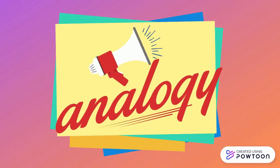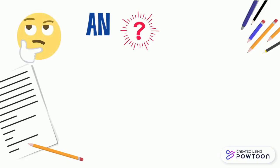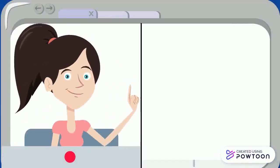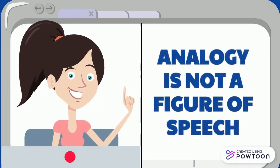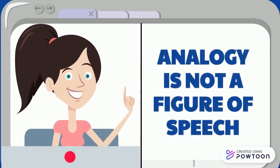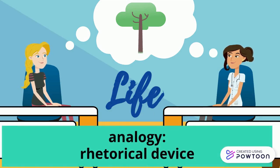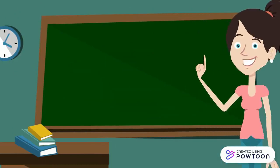One example of these techniques is the use of analogy. An analogy is a literary technique that involves comparison of how two things are alike, but with the ultimate goal of making a point about this comparison. Although often similar or related to simile and metaphor, an analogy is not a figure of speech. It is a rhetorical device used to make rational arguments and support ideas by showing connections and comparisons between unlike things.